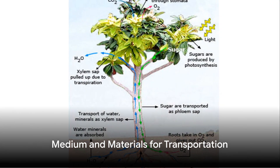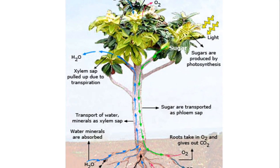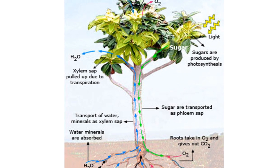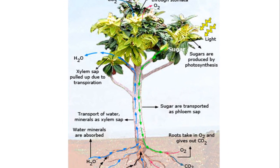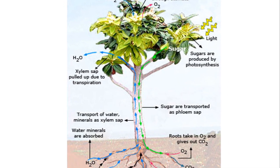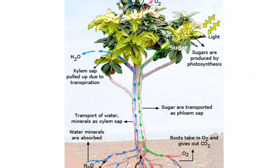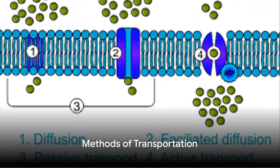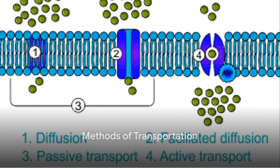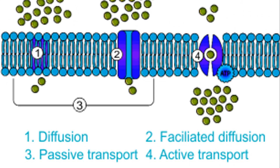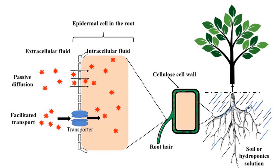Now, what does a plant need for this transportation? It's simple — a medium and materials to transport. The medium is typically water and the materials include minerals, sugars and other organic substances. Now, on to the methods of transportation. Plants primarily use three methods: diffusion, osmosis and active transport.